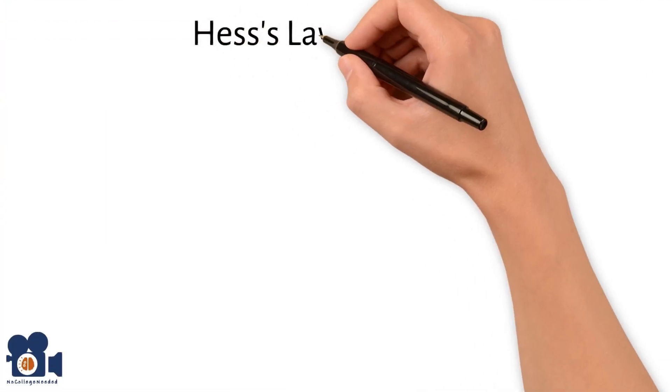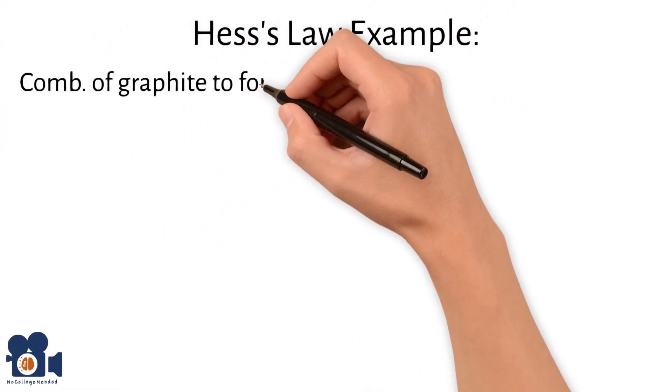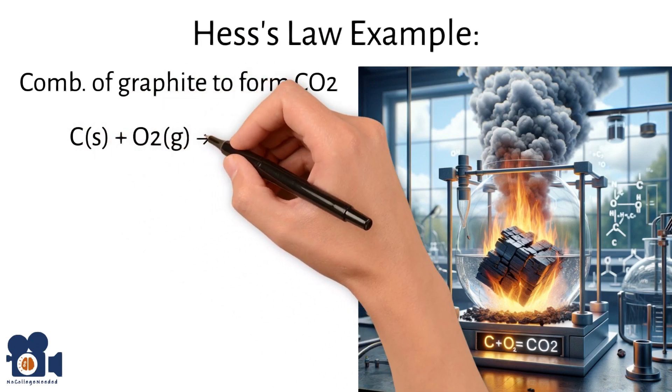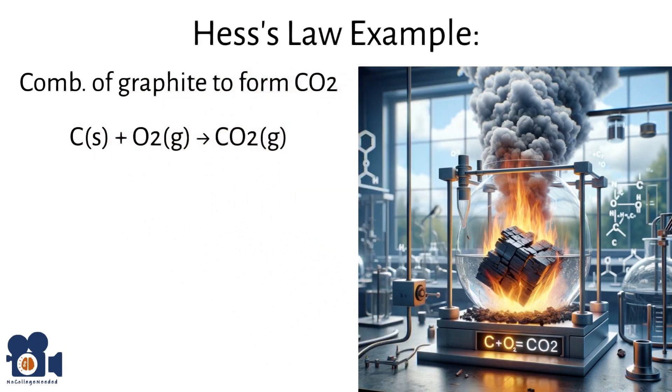An example of Hess's law is in the combustion of graphite to form carbon dioxide: C solid plus O2 gas going to CO2 gas. Direct measurement of this reaction's delta H might be challenging. However, if the delta H for the formation of carbon monoxide from C and the delta H for the oxidation of carbon monoxide to carbon dioxide are known, these reactions can be combined to represent the total overall reaction.